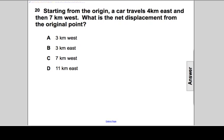Starting from the origin, a car travels four kilometers to the east and seven kilometers to the west. What is the net displacement? When we're calculating displacement or when they say the net displacement, what is the total displacement from our starting point, the original point which is the origin.